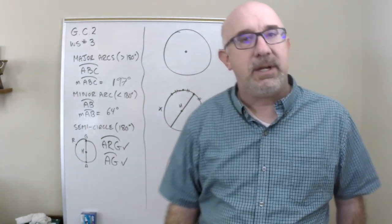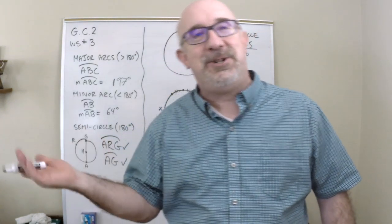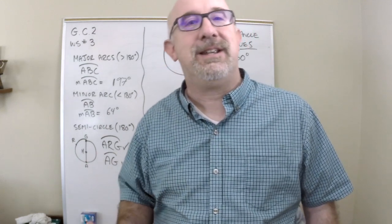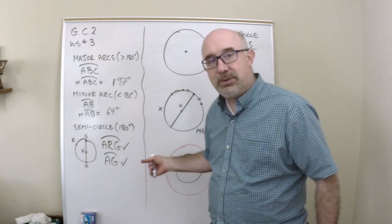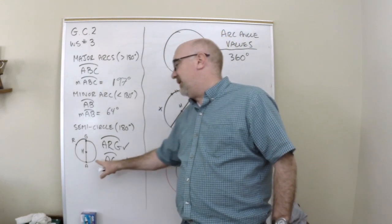Now a semicircle is kind of unique, because is it major, is it minor? The answer is, it's kind of both. Not really. But the truth is, notation-wise, it's kind of both. Because, in this case, yes,